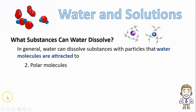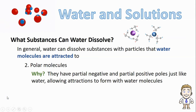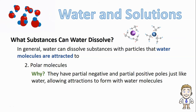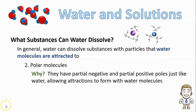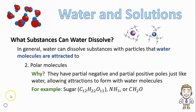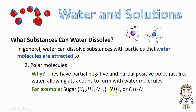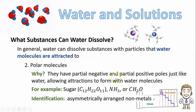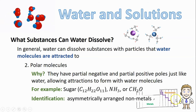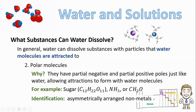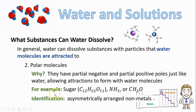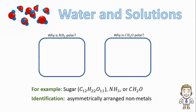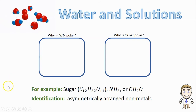Ionic substances aren't the only things that water is attracted to. Water as a polar molecule would also be attracted to other polar molecules. Other polar molecules have partial negative and partial positive poles just like water does, so attractions form between those particles and water molecules, allowing them to dissolve in water as well. Some examples include sugar, NH₃ (which is ammonia), or CH₂O (which is formaldehyde). To identify polar molecules, you want to look for molecules made of only non-metals — only atoms above the staircase on the right-hand corner — and the molecule should have its atoms asymmetrically arranged. We can use NH₃ and CH₂O as good examples.